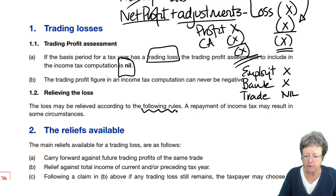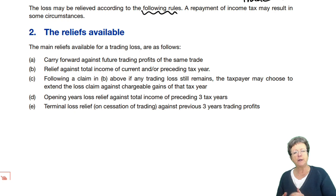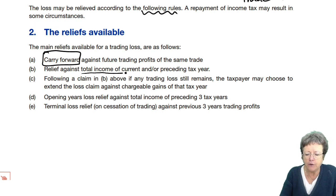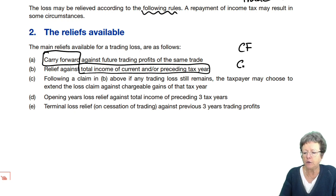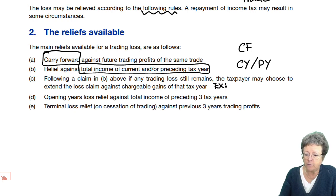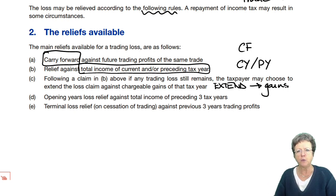These are the rules, and it can sometimes result in a repayment of tax. These are the main reliefs you can have for a trading loss. One: you can carry it forward against future trading profits from the same trade — that's carry it forward. Two: relieve against total income in the current and/or preceding tax year. Or, you can then extend it into gains — very special rules there, because you're crossing over between income tax and capital gains, so it's an unusual one and doesn't come up often.